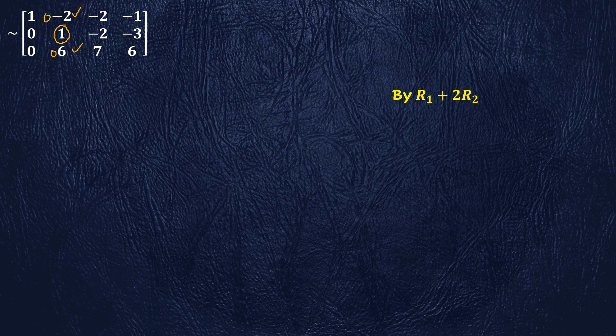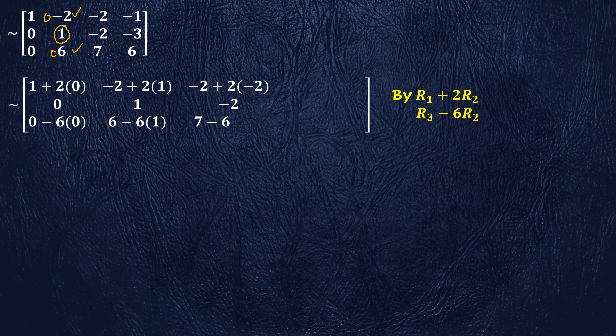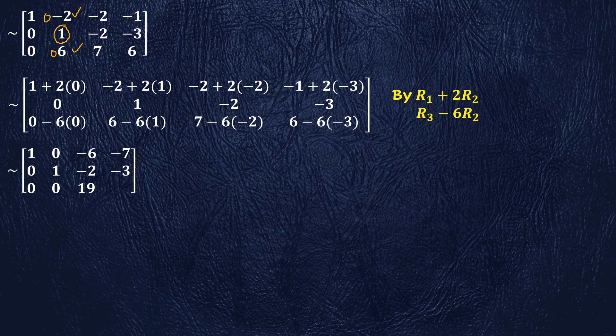The first non-zero element in row 2 is 1. We make elements above and below it zero. For this we multiply row 2 by 2 and add it to row 1, and multiply row 2 by 6 and subtract it from R3. After performing these row operations we are left with the transformed augmented matrix: 1 0 -6 -7 | 0 1 -2 -3 | 0 0 19 24.